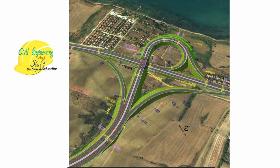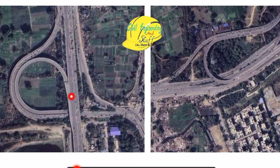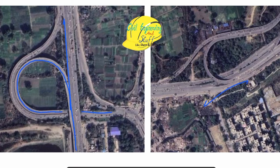In a Y-interchange scenario, traffic going on the road at higher elevation can use the interchange facility to move to the road at lower elevation, and likewise traffic at lower elevation can use the interchange to move upward. The practical examples shown here illustrate the road at higher elevation, the road going below it at lower elevation, and the interchange facilities connecting them.